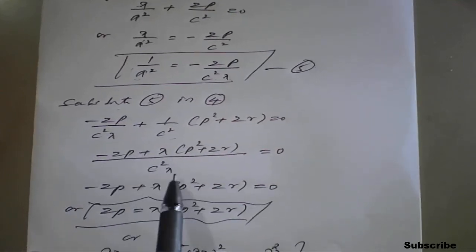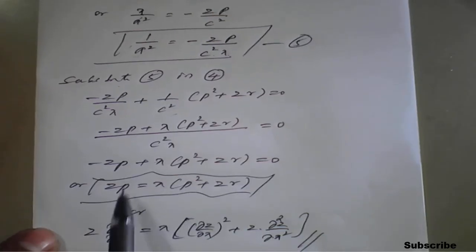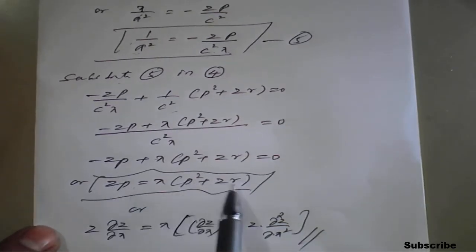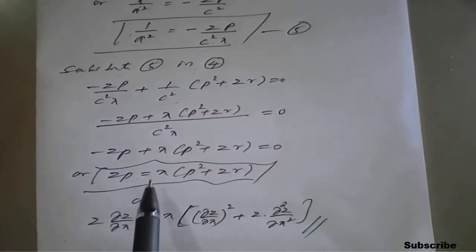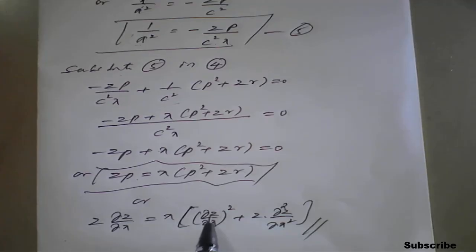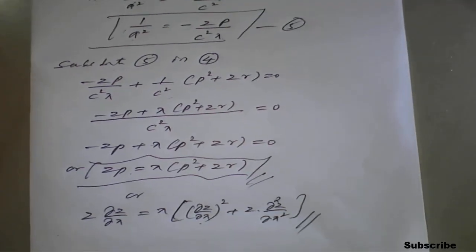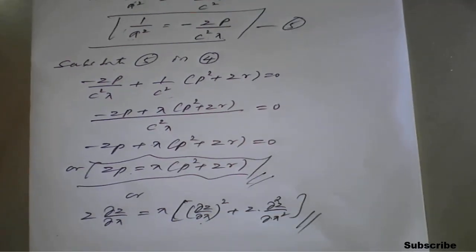On simplification and rearranging, we get zp = x(p² + zr) as the required PDE. In full notation: z·(∂z/∂x) = x[(∂z/∂x)² + z·(∂²z/∂x²)]. This is the PDE formed by eliminating three arbitrary constants from an equation with two independent variables, requiring a second-order partial derivative.